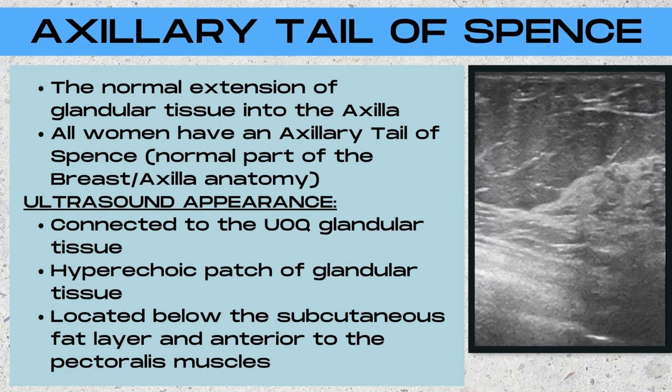The axillary tail of Spence is the normal extension of glandular tissue into the axilla. All women have an axillary tail of Spence — this is a normal part of the breast and axilla anatomy. The ultrasound appearance is going to be a hyperechoic patch of glandular tissue that is contiguous or connected to the upper outer quadrant glandular tissue. You'll know it's the axillary tail of Spence because this tissue just continues on up into the lower axillary region, and also by its depth on the ultrasound image.